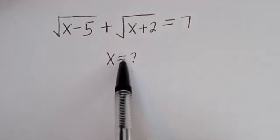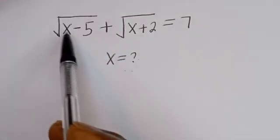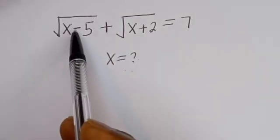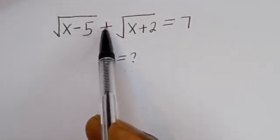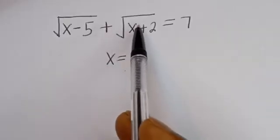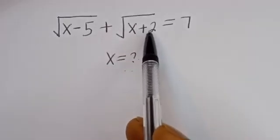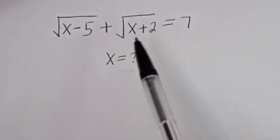Hello. How to solve for s in this equation: square root of s minus 5, plus square root of s plus 2, is equal to 7?